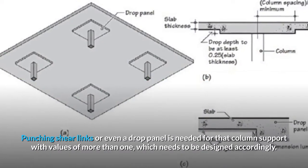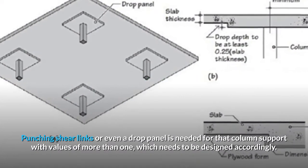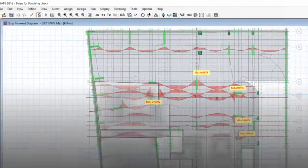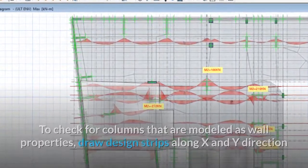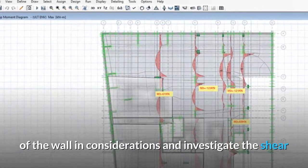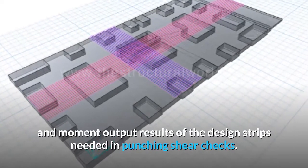Punching shear links or even a drop panel is needed for that column support with values of more than one, which needs to be designed accordingly. To check for columns that are modeled as wall properties, draw design strips along X and Y direction of the wall in considerations and investigate the shear and moment output results of the design strips needed in punching shear checks.